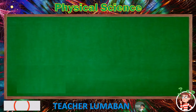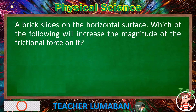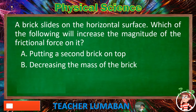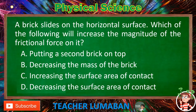A brick slides on a horizontal surface. Which of the following will increase the magnitude of the frictional force on it? Letter A: Putting a second brick on top. Letter B: Decreasing the mass of the brick. Letter C: Increasing the surface area of contact. Letter D: Decreasing the surface area of contact.